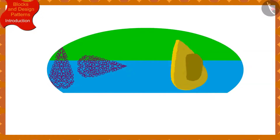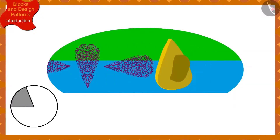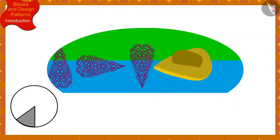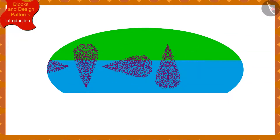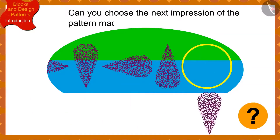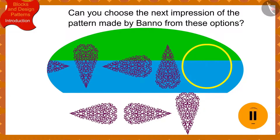Children, if Banno has made this design so far by rotating the block by a quarter in the clockwise direction every time, can you choose the next impression of the pattern from these options? If you wish to, you may stop the video and think of the answer.